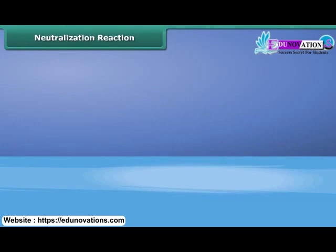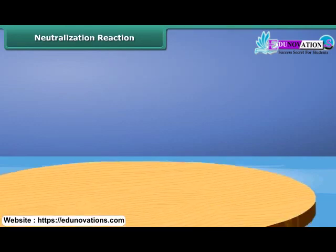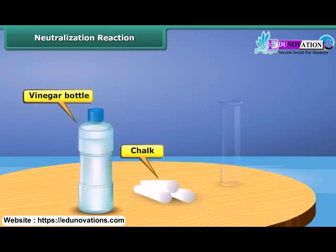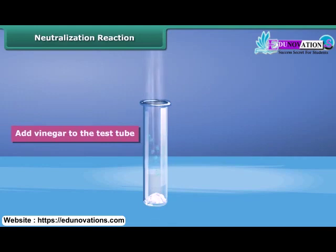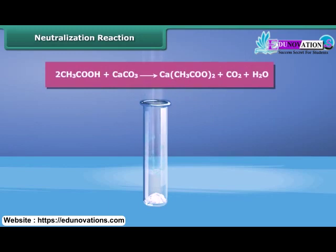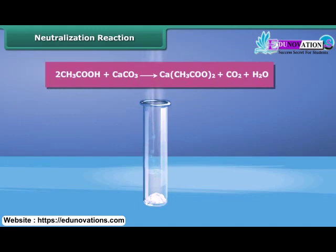To understand neutralization, take a piece of chalk, vinegar, and a test tube. Drop some crushed chalk into the test tube and add vinegar. The chalk reacts with vinegar and bubbles of carbon dioxide come out. A white solid, calcium acetate, is formed. Chalk is calcium carbonate and vinegar is acetic acid in water. When they react, carbon dioxide, water, and calcium acetate are formed. Thus, an acid reacts with a base to form salt.